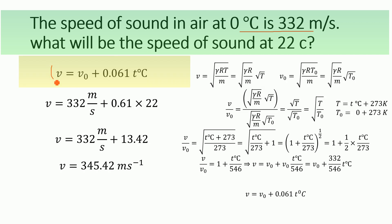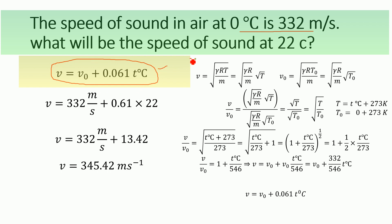We will use this equation: v is equal to v-naught plus 0.061 multiplied by t, where t is in degrees centigrade. We derived this equation in one of our previous videos, and here is a quick review of how to derive it.